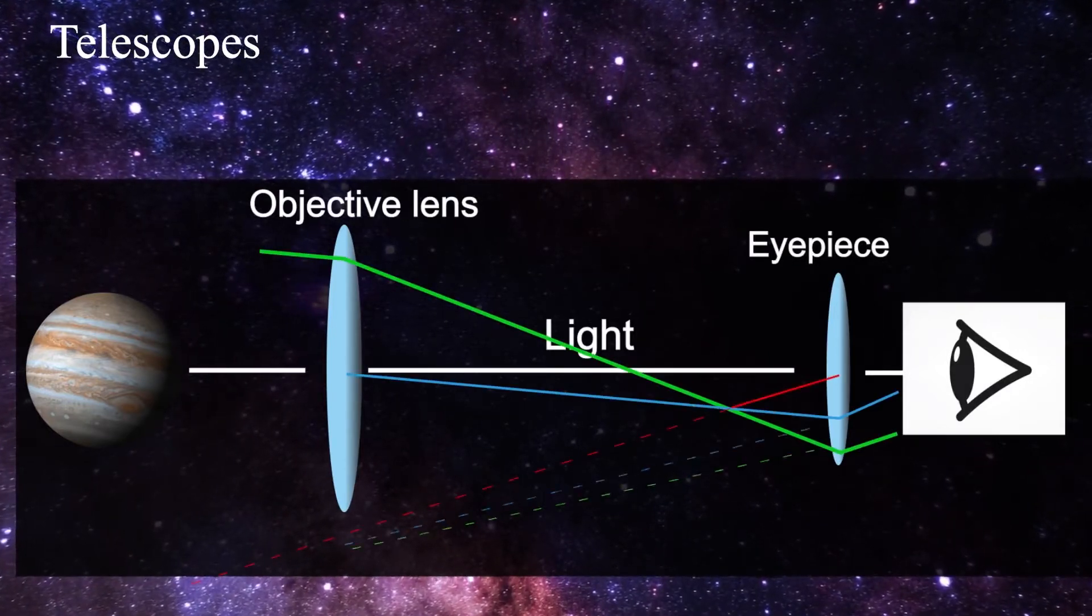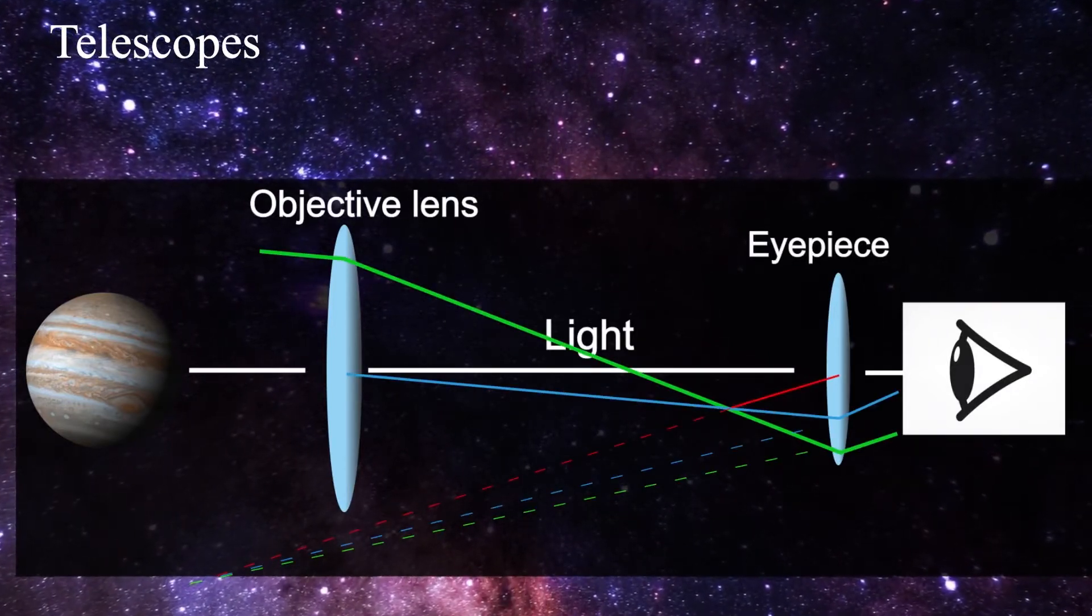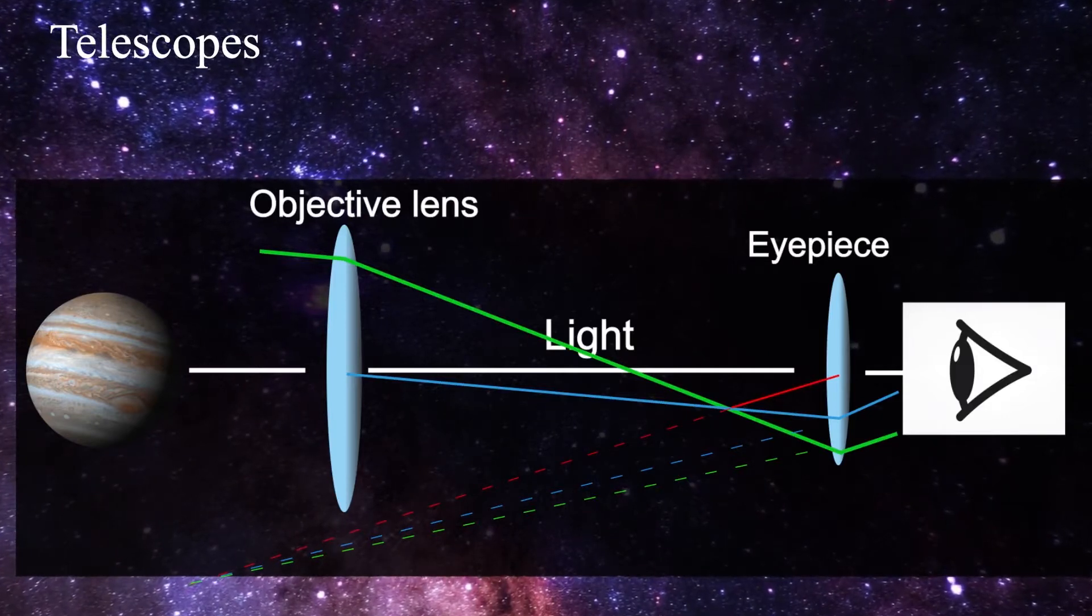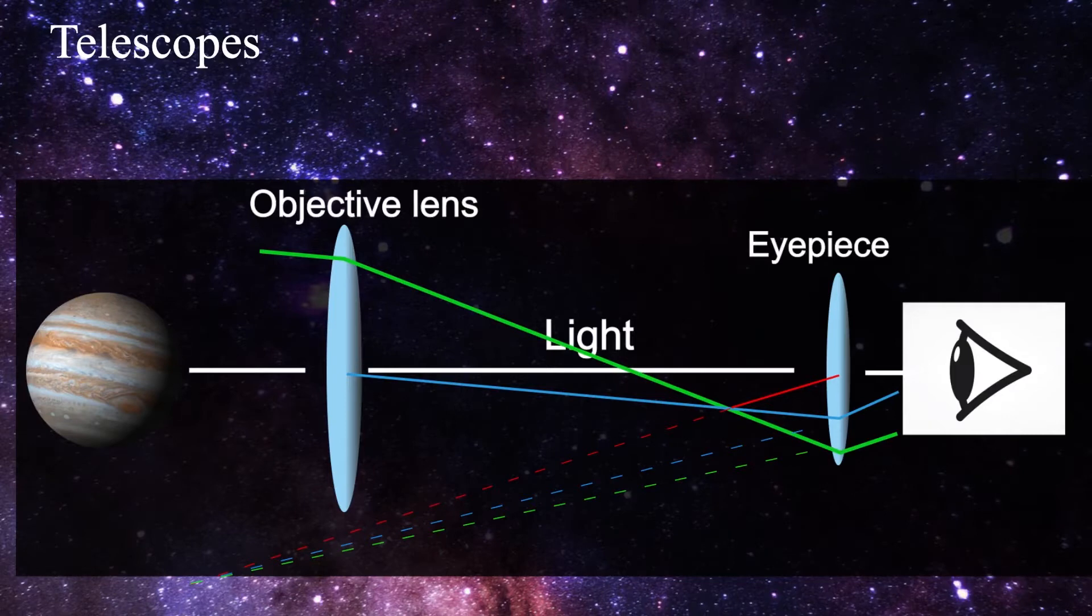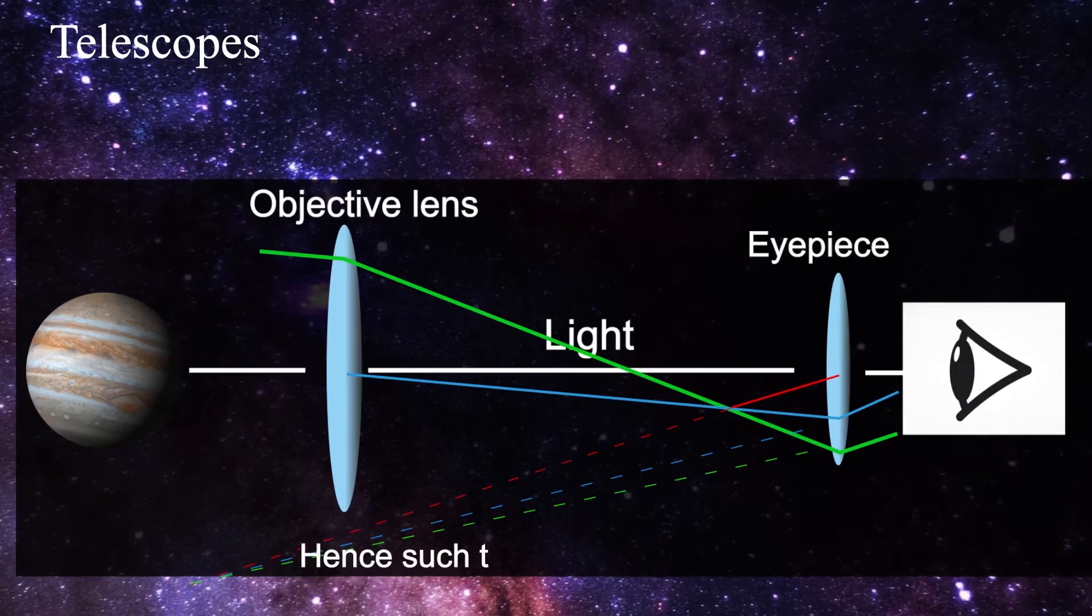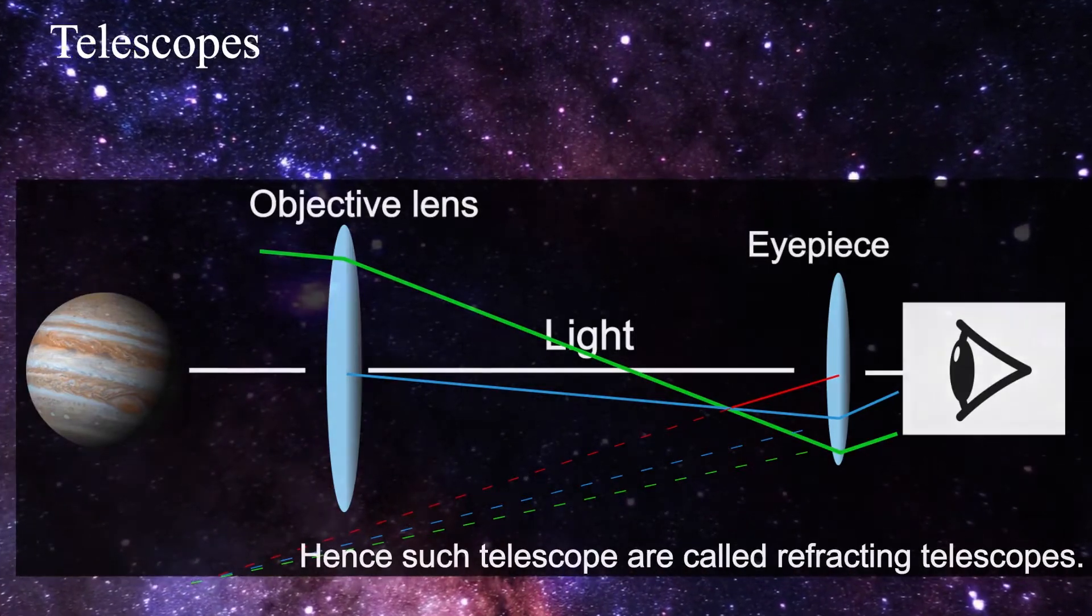Light rays change their direction as they enter a lens from the atmosphere and again when they enter the atmosphere after passing through the lens. This is called refraction. Hence, such telescopes are called refracting telescopes.